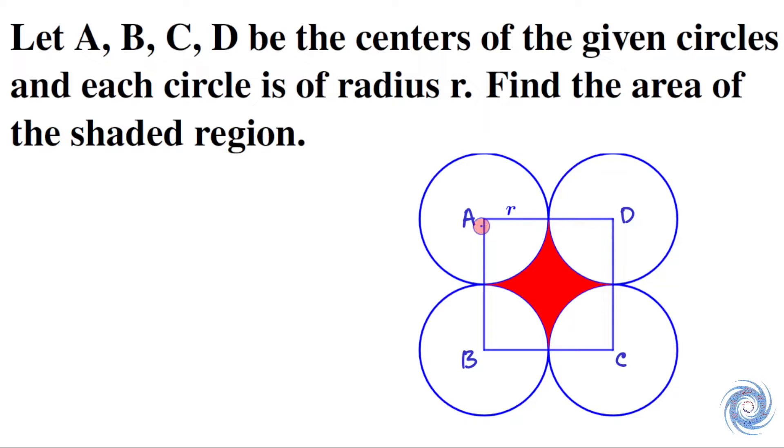So here we have four circles each of radius r centimeter and the centers are A, B, C and D. Now if we connect A, B, C and D then we will get a square ABCD. Now note that since a circle is of radius r, therefore this is also r. Therefore ABCD is a square of side 2r.